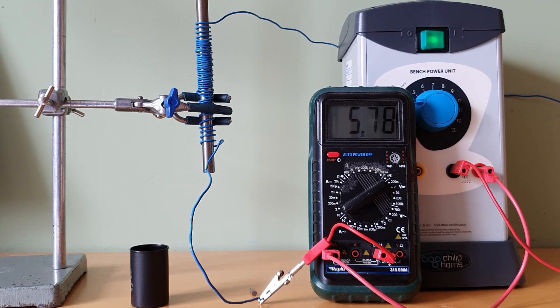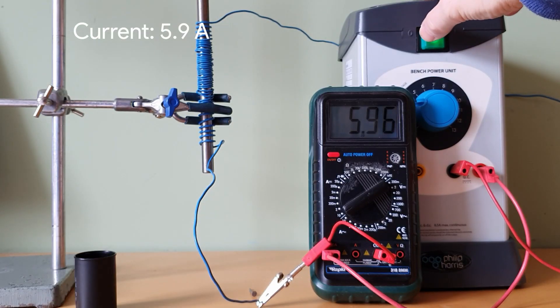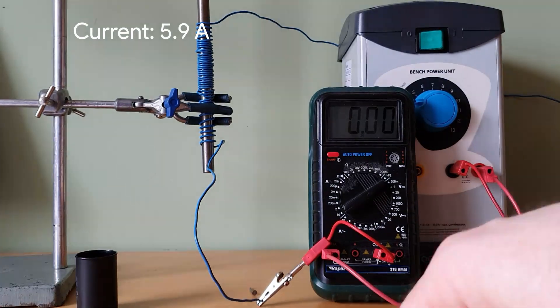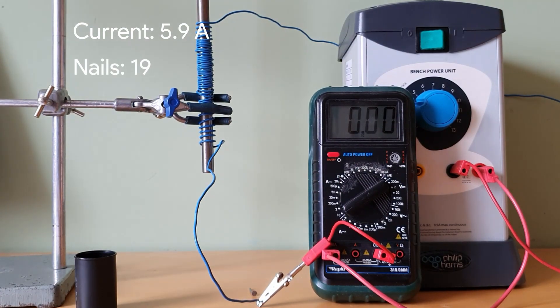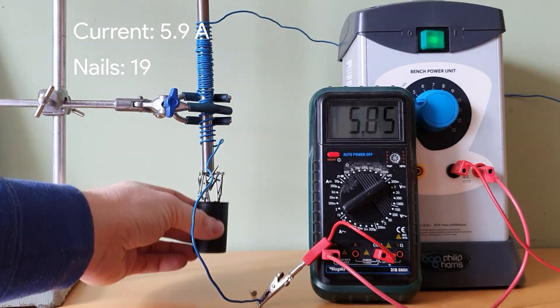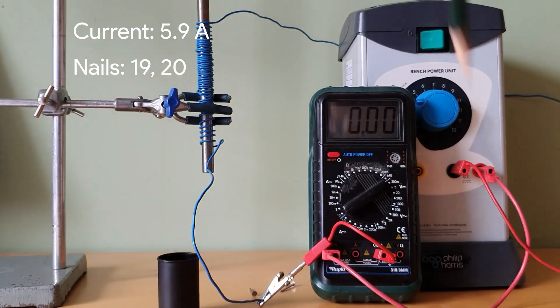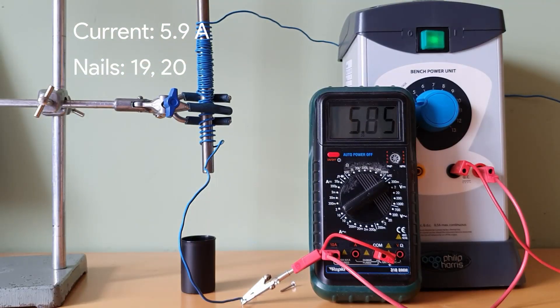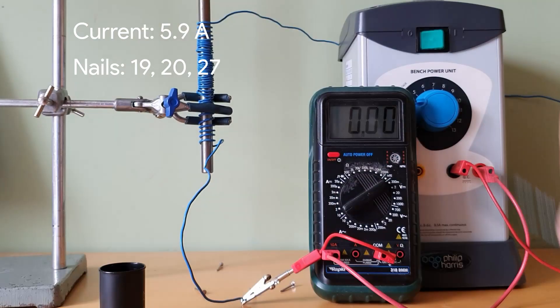I've got quite a large current. We'll say 5.9 amps. I'm going to turn off the power supply between readings to let it cool down. Fifteen, sixteen, seventeen, eighteen, nineteen. Seventeen, eighteen, nineteen, twenty. Twenty-seven.